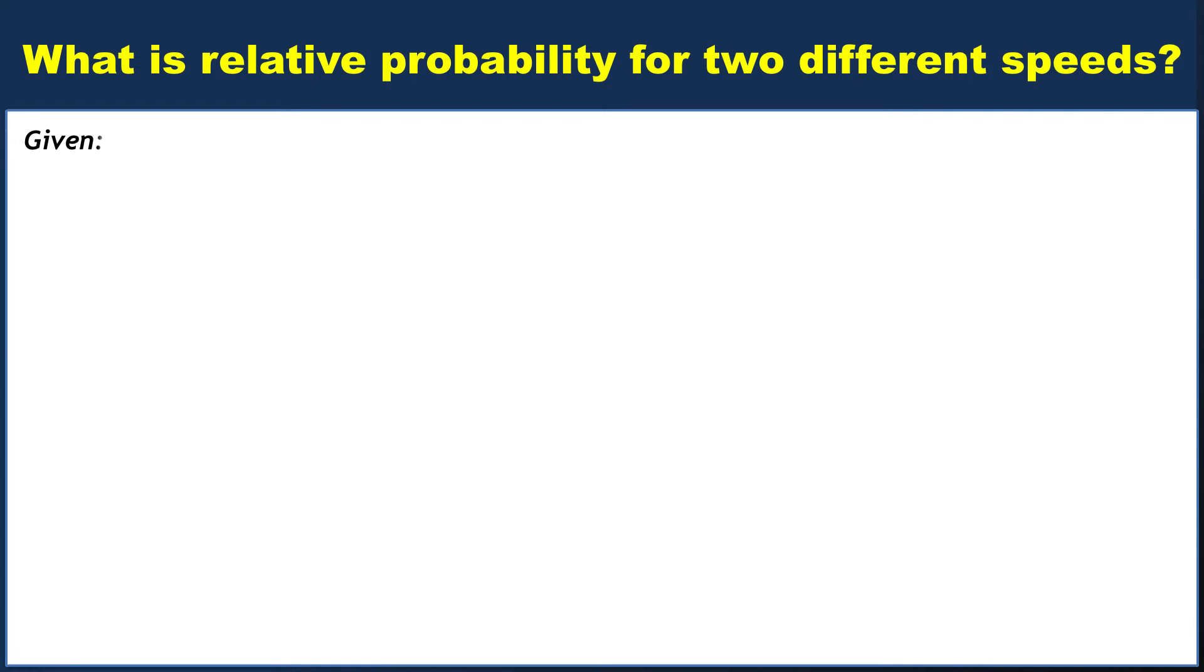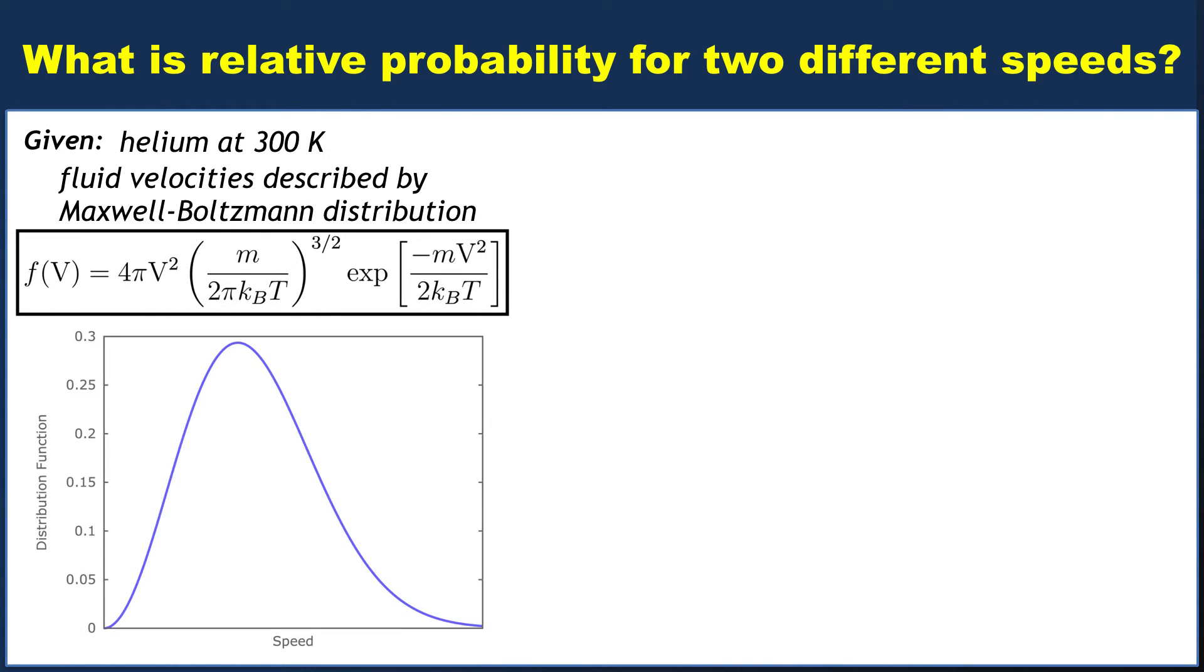Consider a volume of helium at 300 Kelvin whose velocities are described by the Maxwell-Boltzmann distribution, given here as a function and graphically. What we want to do is compute the relative probability of finding two different speeds in this distribution.